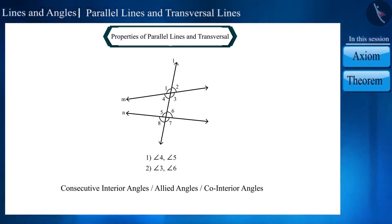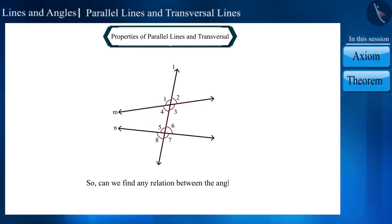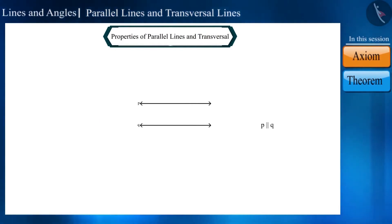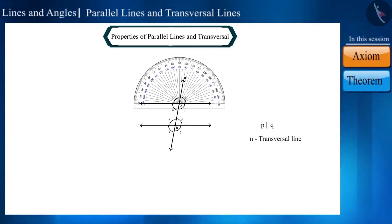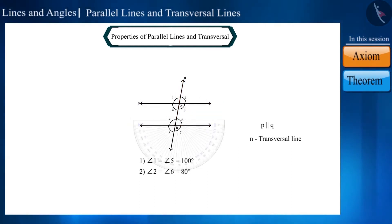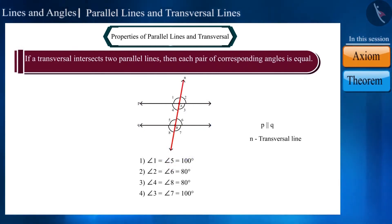If these two lines are parallel and a transversal intersects them, what is the relation between the angles? Drawing two parallel lines P and Q with transversal N intersecting at points A and B: using a protractor, we find angle 1 equals angle 5, angle 2 equals angle 6, angle 4 equals angle 8, and angle 3 equals angle 7. Therefore: if a transversal intersects two parallel lines, each pair of corresponding angles are equal. This is called the corresponding angles axiom.